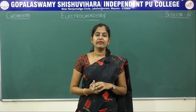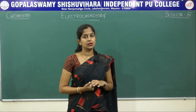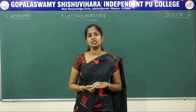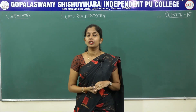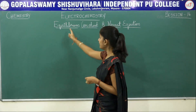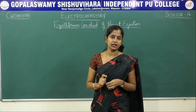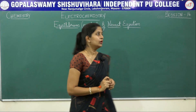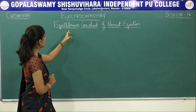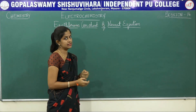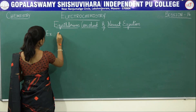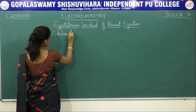Good morning students. Today we will be starting with a new session, session number 15. We will be discussing the relationship between your equilibrium constant and E naught cell through the Nernst equation. You can calculate the equilibrium constant Kc for a cell reaction. To derive this relationship, I will be taking an example of a Daniel cell.